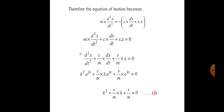Assuming a solution of the form e raised to kt and substituting, we resolve into particular terms of k. By simplification we get the characteristic equation: k² plus (c/m)k plus s/m equals zero.